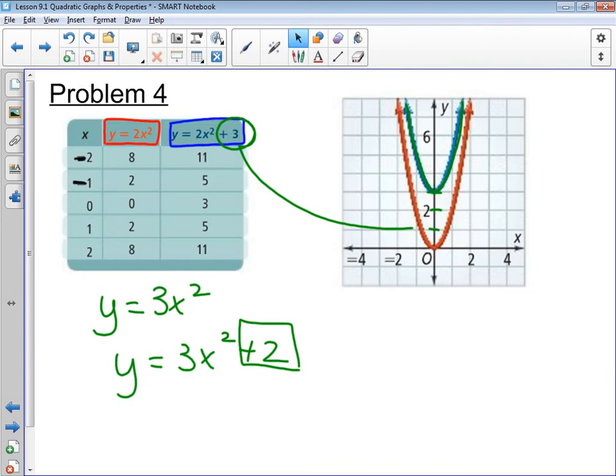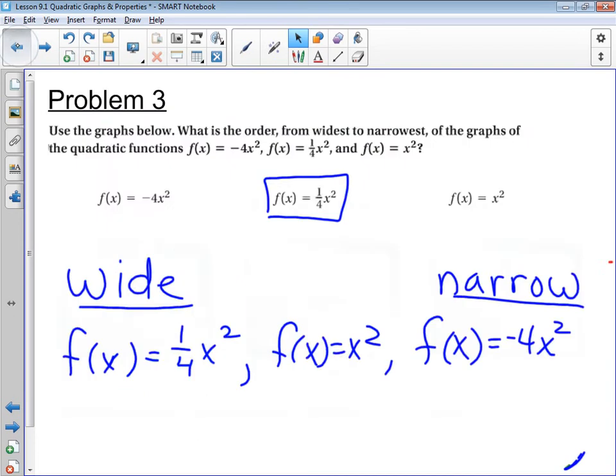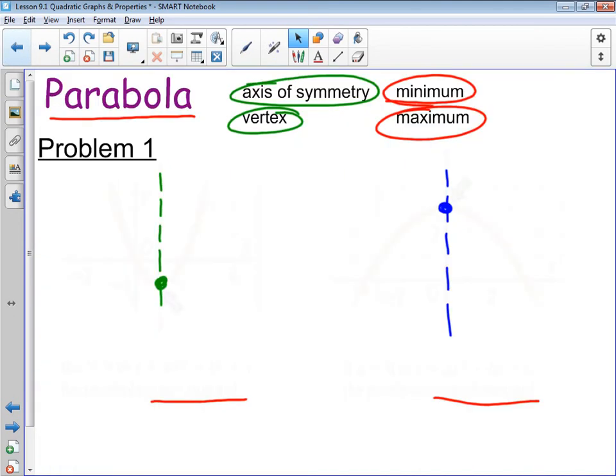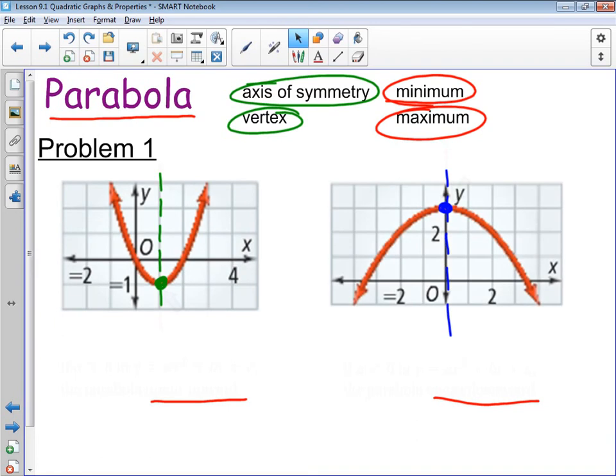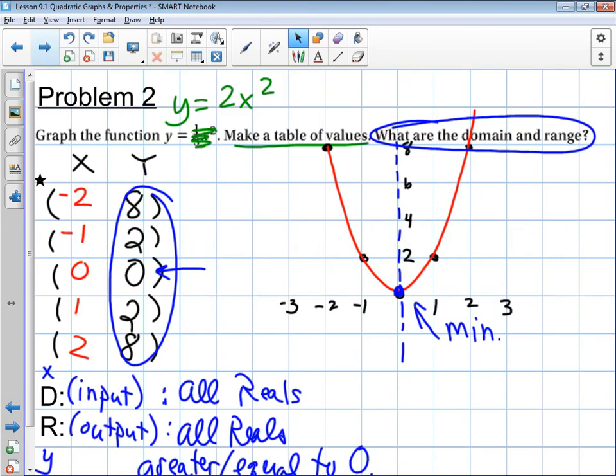Okay. A lot of information. Not very difficult, but lots to process. So, let's review really quickly. A parabola is what you get when you graph a quadratic function. It's symmetrical. It has a vertex, and the vertex can either be a minimum if it's at the bottom, a maximum at the top.